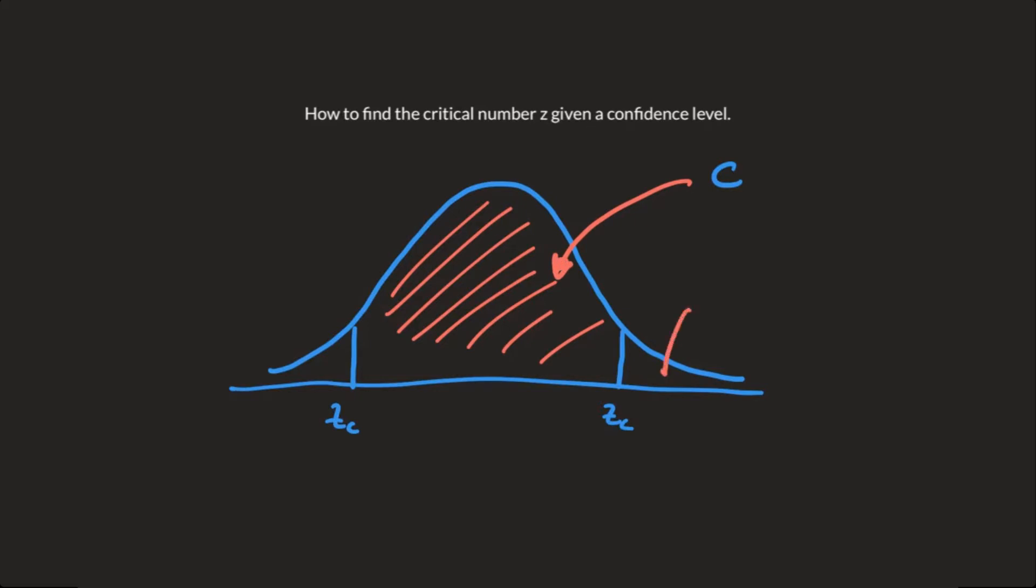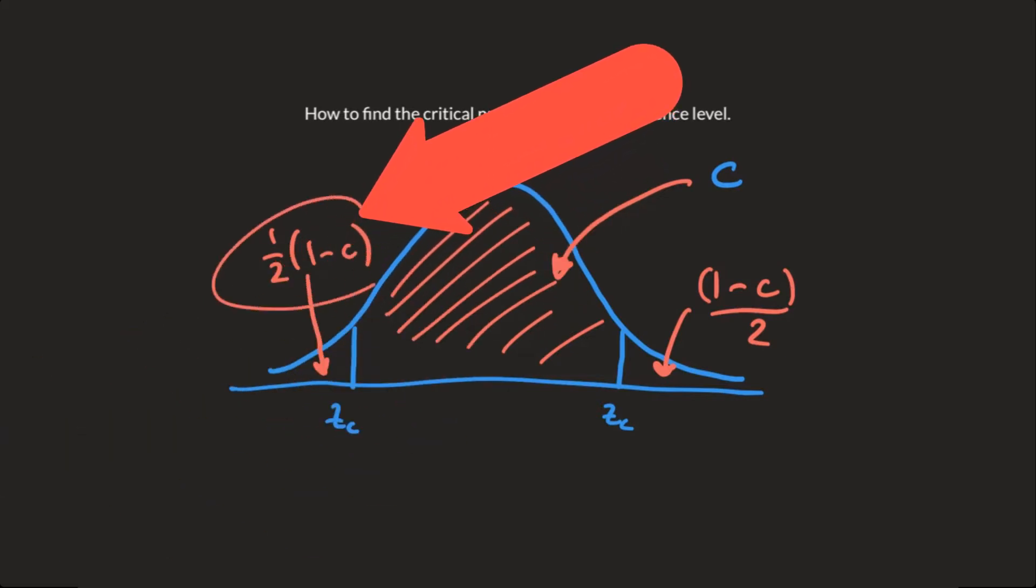So out here, this is actually going to be 1 minus c, but then half of it, because over here, you have the other half. Now it'll make sense when we use real numbers for c. So all you're going to do is you're going to open up the normal table, and you're going to go find the z value that's associated with this area right here.